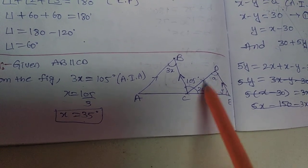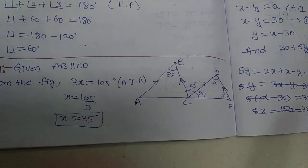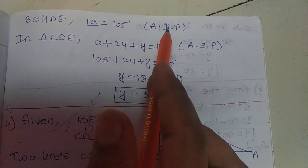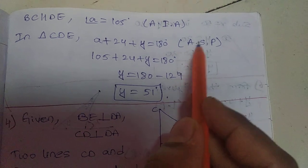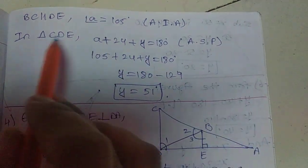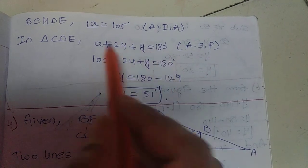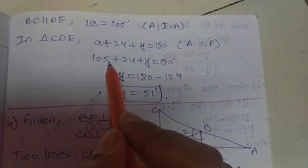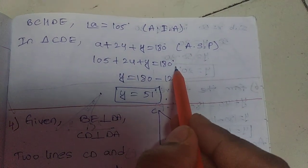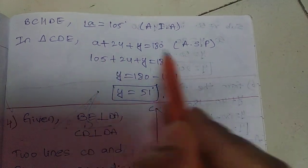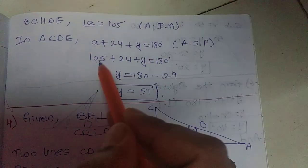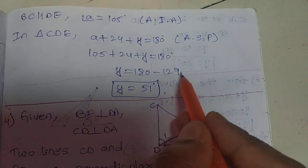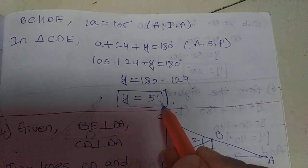In triangle CDE, using the angle sum property of a triangle: the three angles sum to 180. So 105 plus 24 plus Y equals 180. 105 plus 24 equals 129. Transposing: 180 minus 129 equals 51. So Y equals 51 degrees.